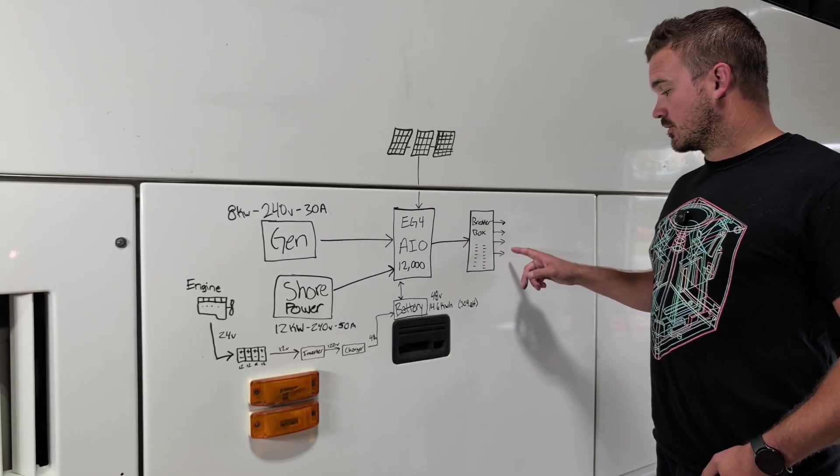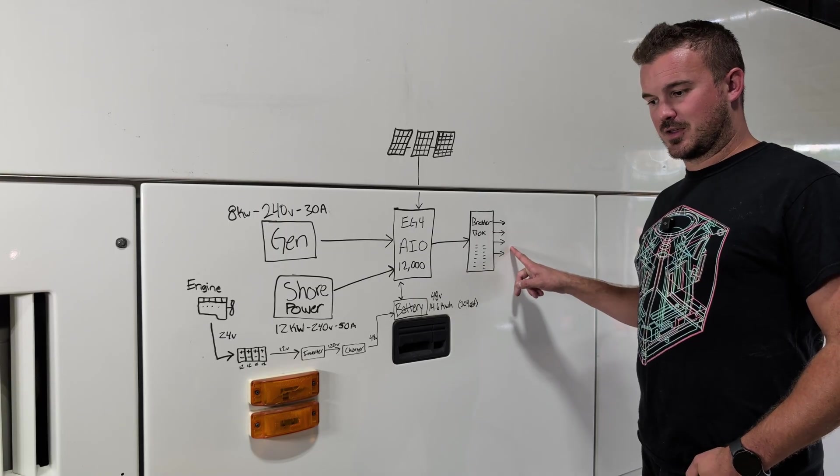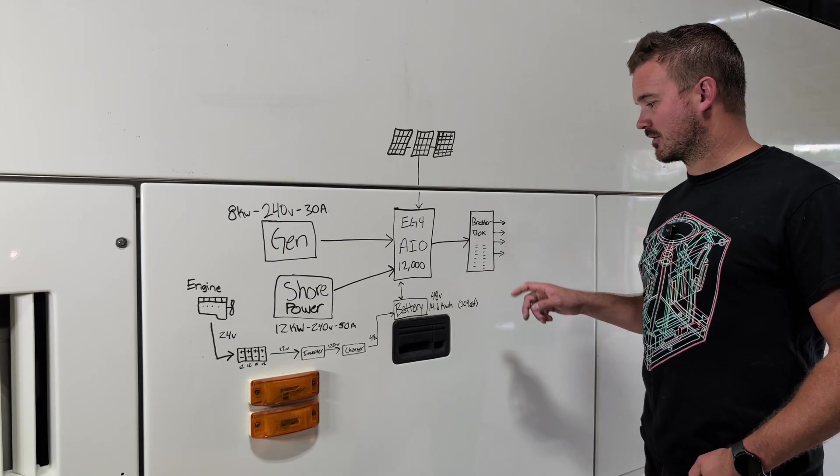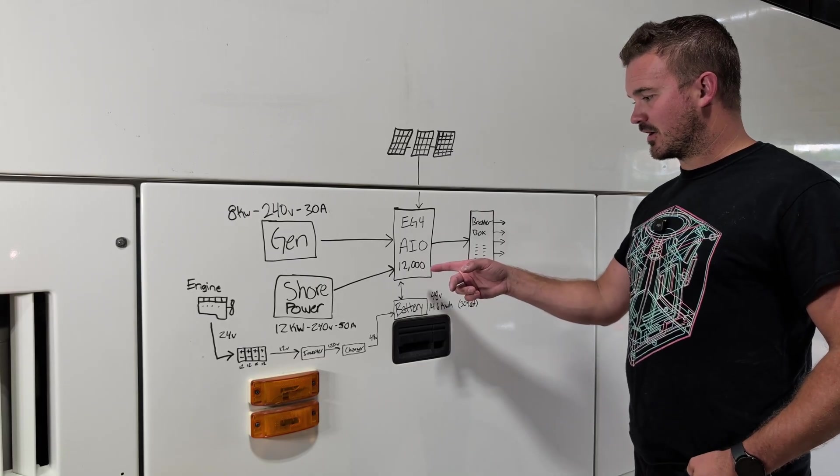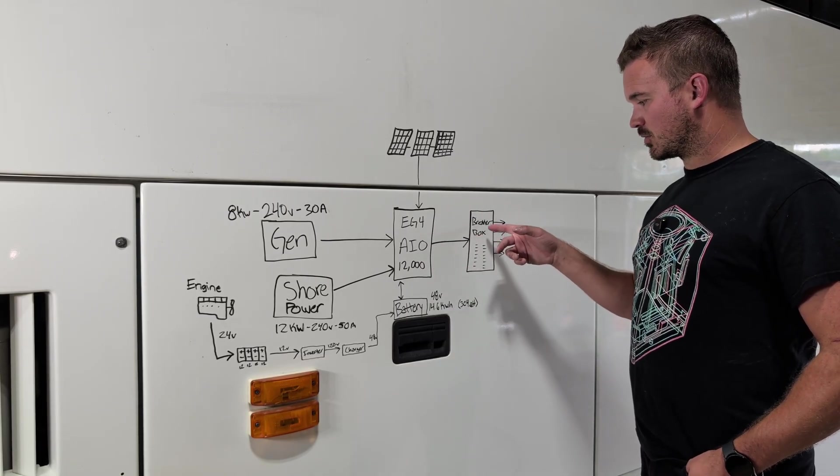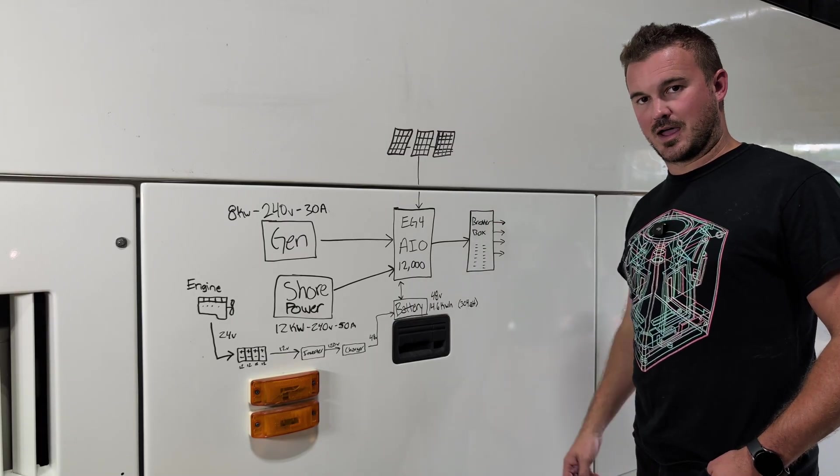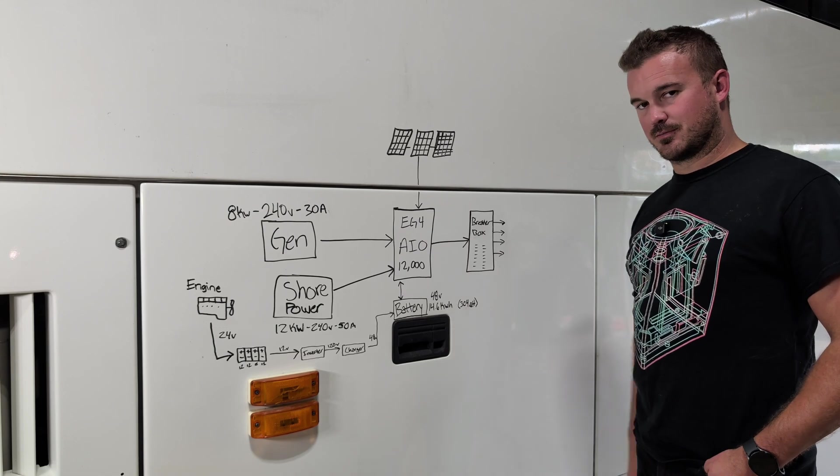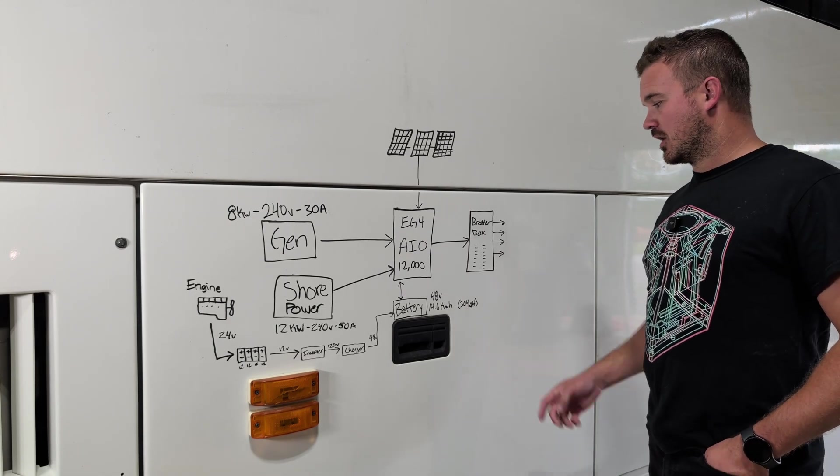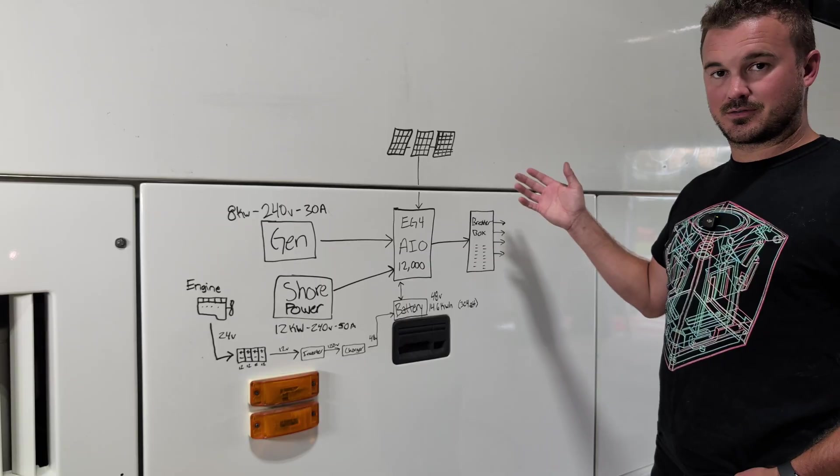We use just a regular residential breaker box. I think it's maybe a 30 circuit box, something like that. And so this can obviously put out 12,000 Watts. And so we just put in the appropriate main breaker at the top. And then we have all of our breakers down below that. It's just like what you probably have in your house somewhere. Then obviously the loads come out from there to their respective circuits in the bus.